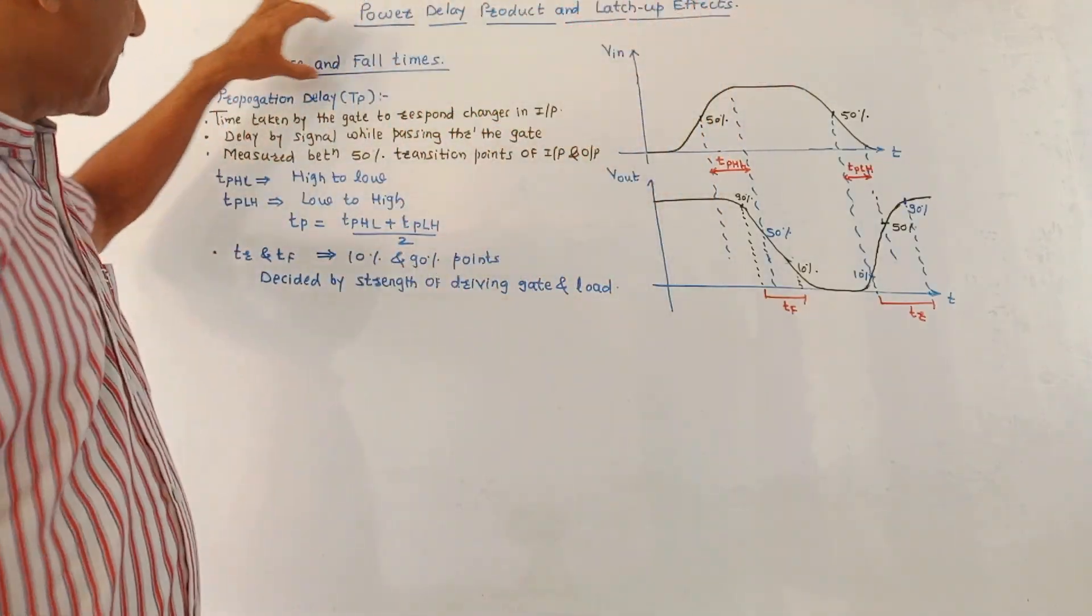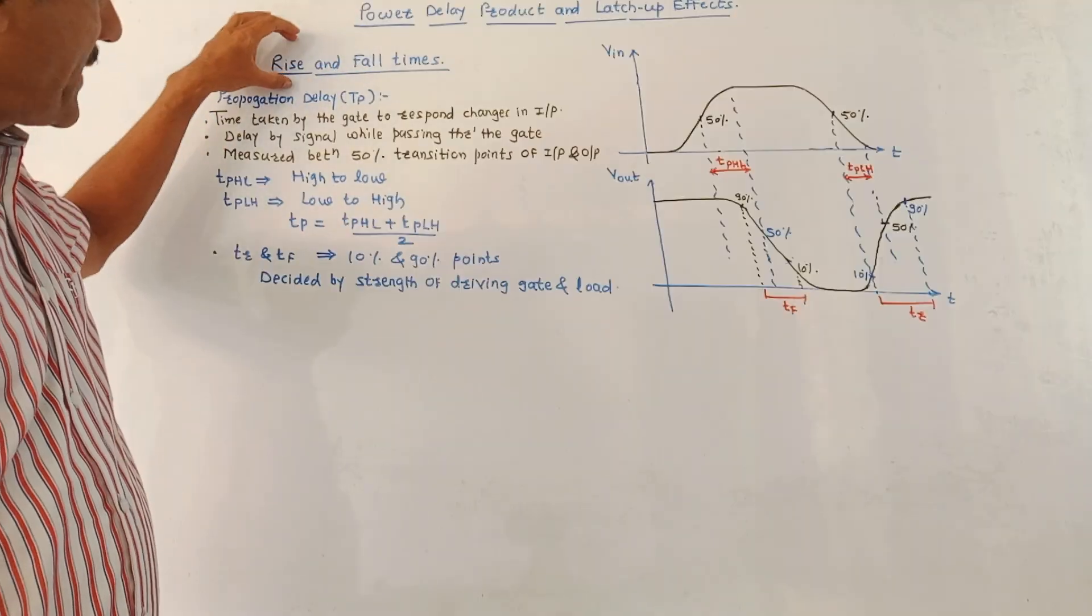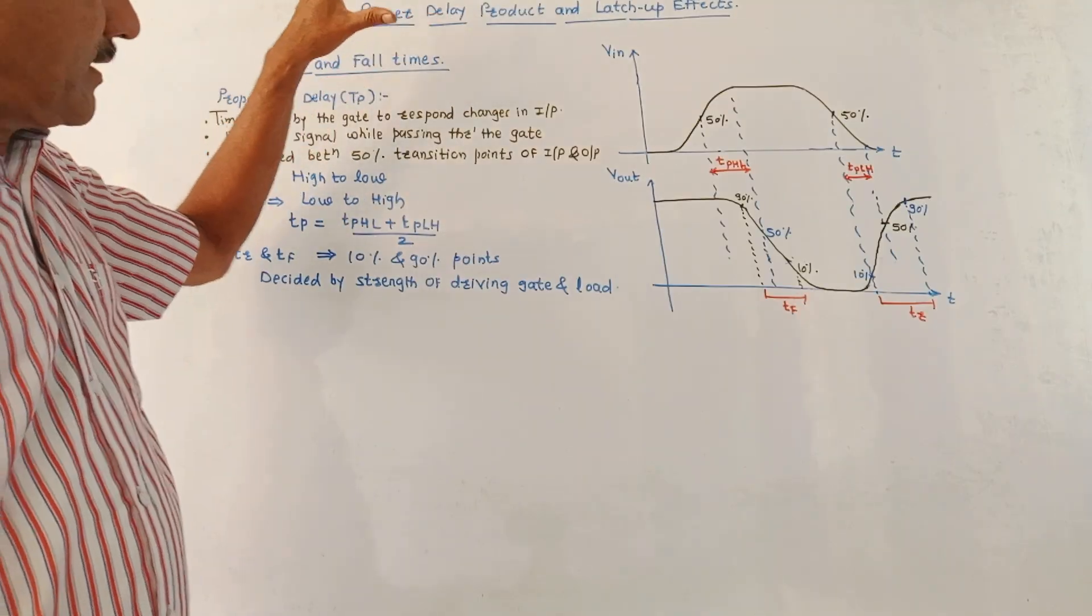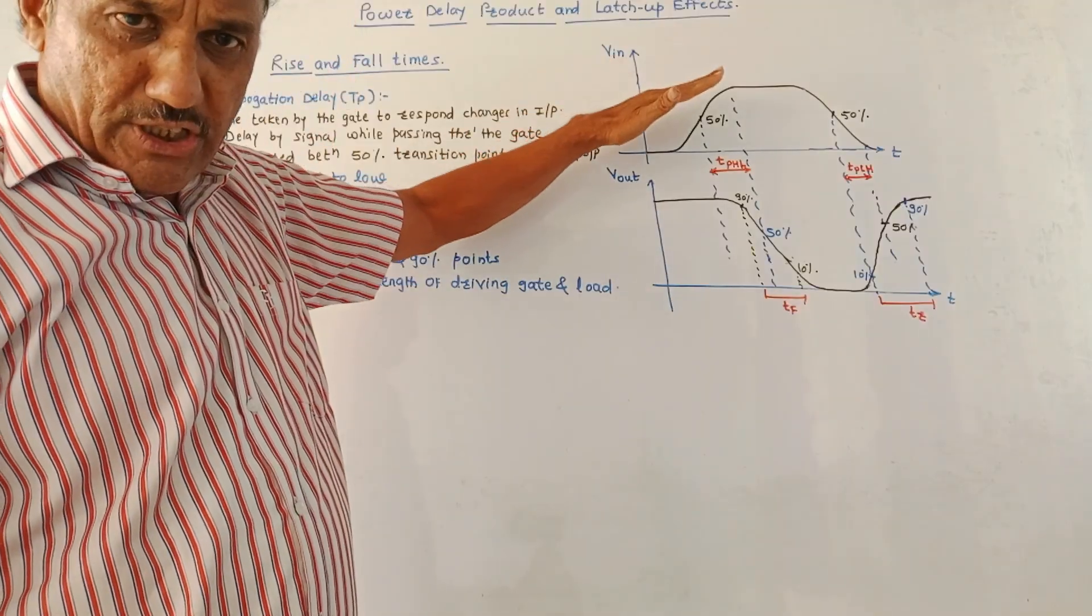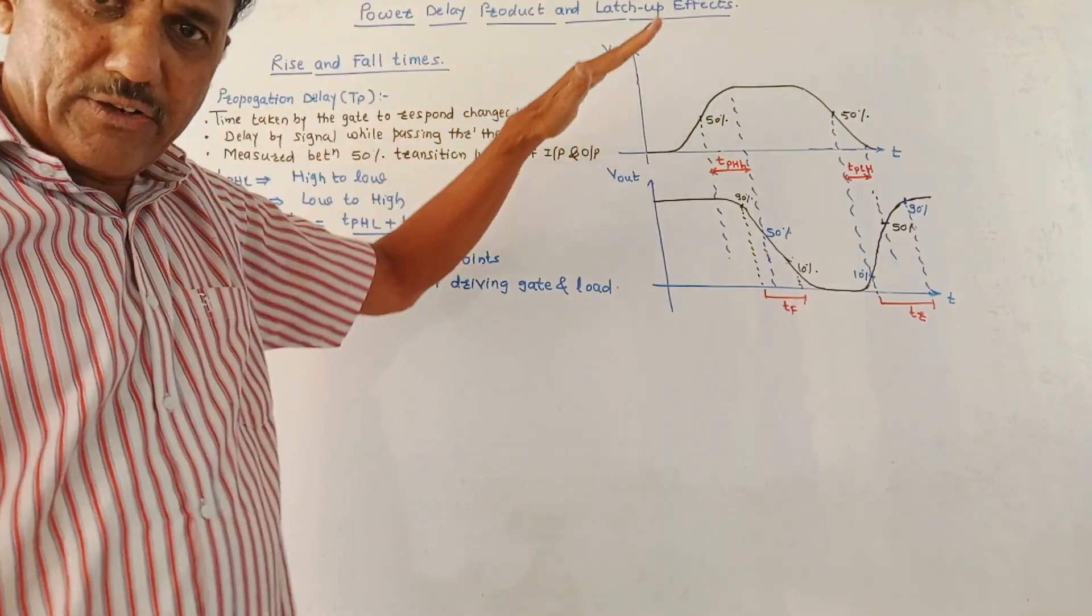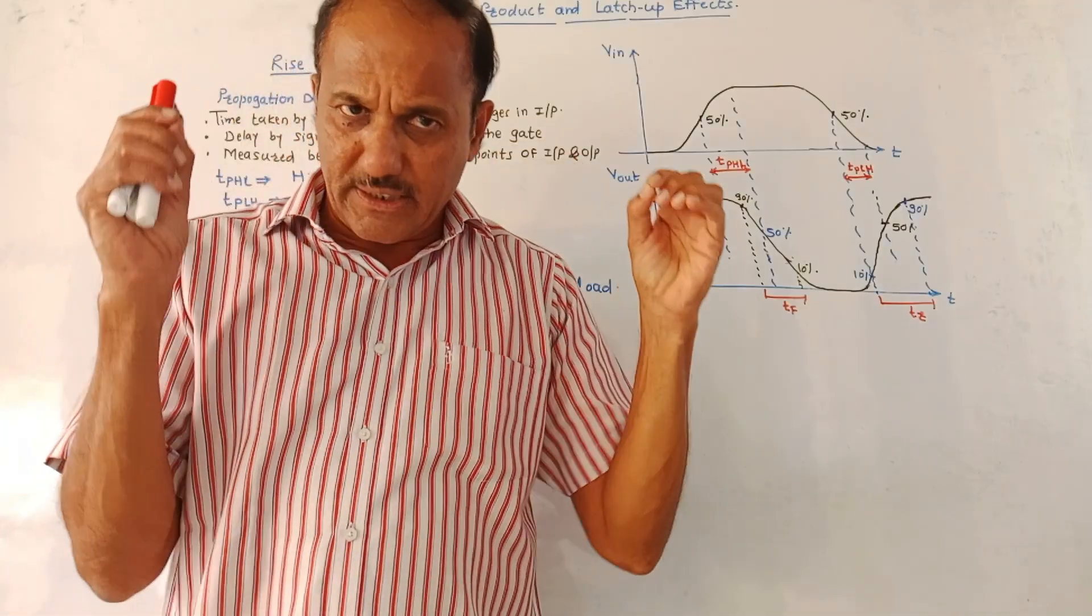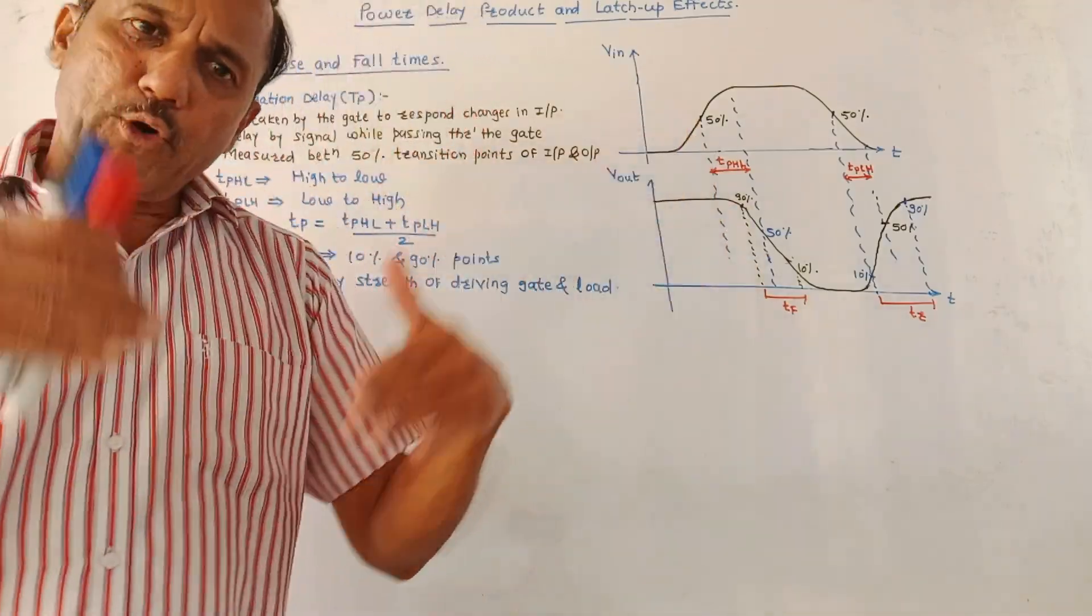First we will discuss the concept of rise and fall times. This diagram shows the explanation related to the rise and fall time. There is one concept which is called propagation delay.